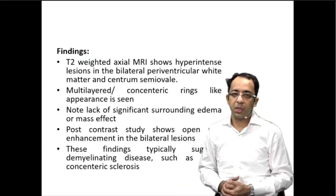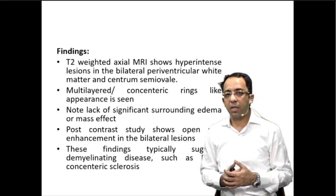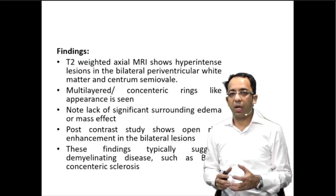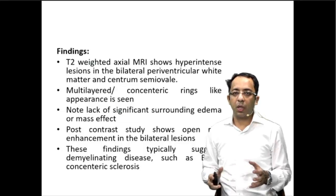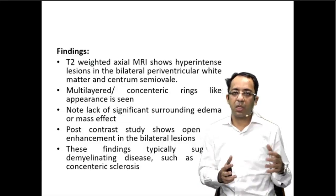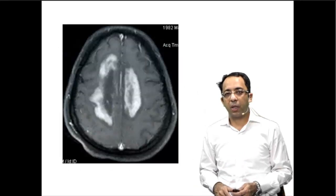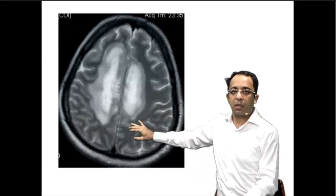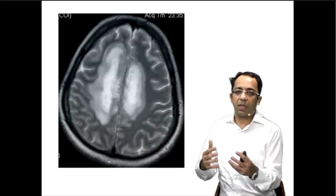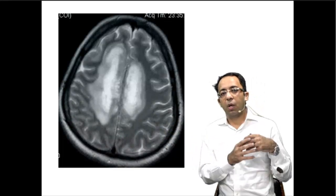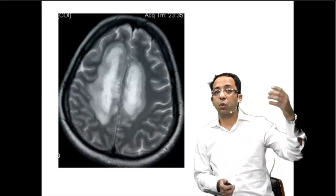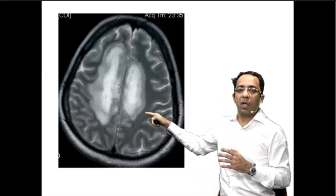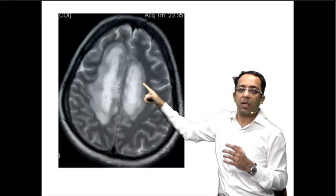Balo's Concentric Sclerosis is a subtype of multiple sclerosis, considered to be the more severe variety, and is usually monophasic. In MRI, we do two types of sequences: T1 weighted and T2 weighted. On a T2 weighted image, white matter is usually dark because of myelin content. Any myelinated tissue has more lipid content, making it bright on T1 and dark on T2 due to lack of water. The demyelinated area appears bright on T2, showing that concentric ring-like appearance typical of Balo's.